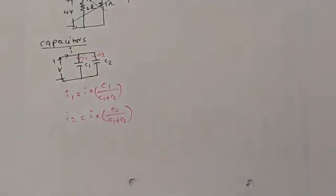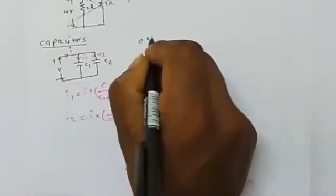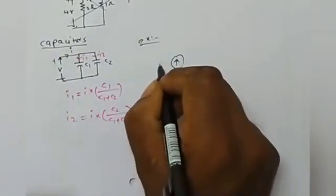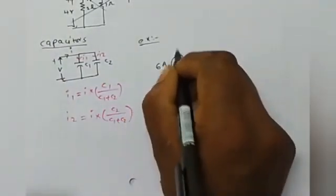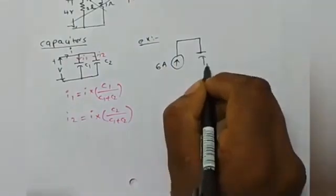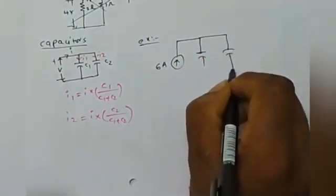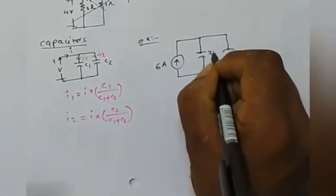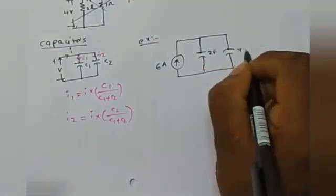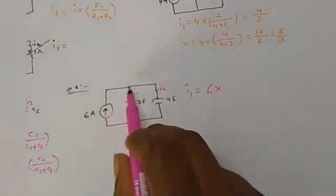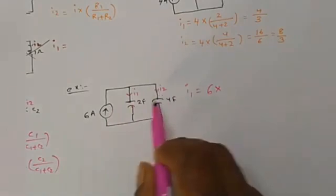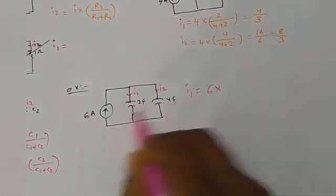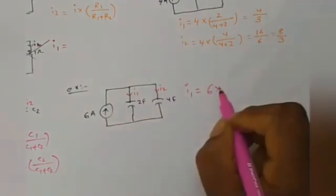For the capacitor example: a 6-ampere current source is connected to two capacitors of 2F and 4F in parallel. We divide the current into I1 and I2. The total current is 6 amperes. Thank you for watching.